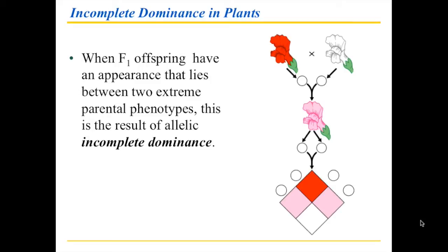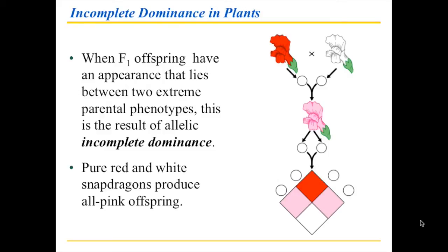The first of these is called incomplete dominance. In incomplete dominance, the offspring don't have the phenotype of one of the parents — they have a blended phenotype. This is not what we saw with pea plants, where 100% were purple-flowered and white disappeared temporarily. The blending does not mean Mendel was wrong; it simply means that how color is produced works a little differently, as seen in snapdragons.